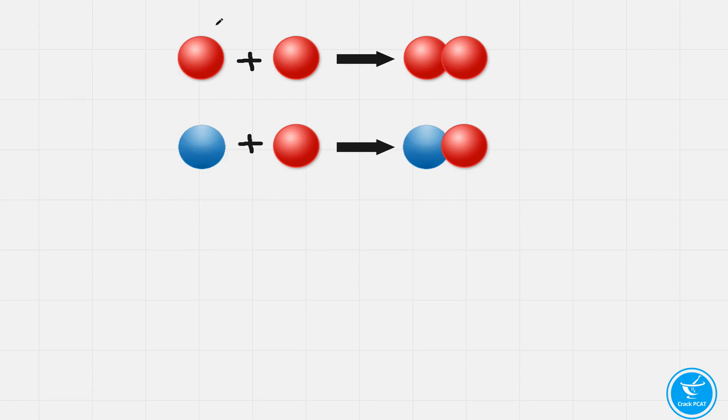So if we look at this first example with these generic atoms, we're going to call this red atom and it's bonding with another red atom and it chemically combines. So we would refer to this as yes.